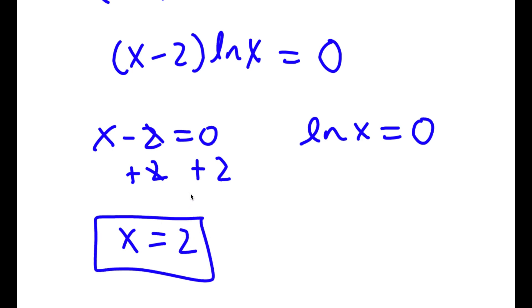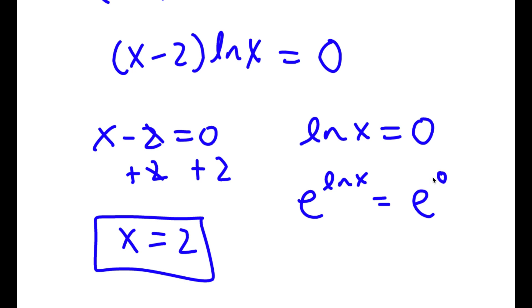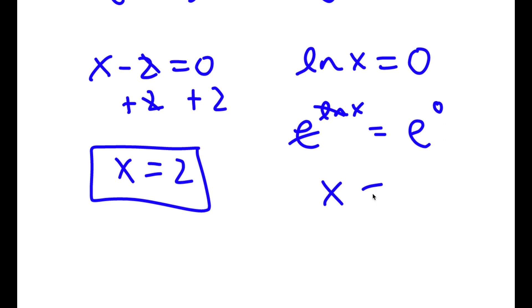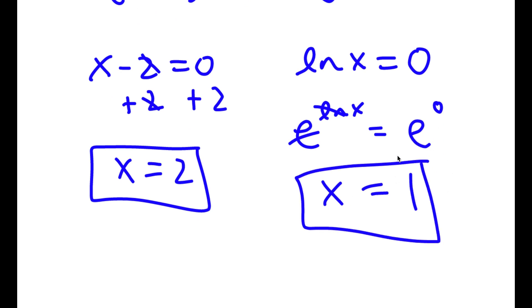Now for ln x is equal to 0, I'm going to take e to the power of both sides. So e to the power of ln x is equal to e to the power of 0. Since e and ln x cancel out, I'm left with x is equal to e to the power of 0, which is 1. So my two values of x are x equals 2 and x is equal to 1.